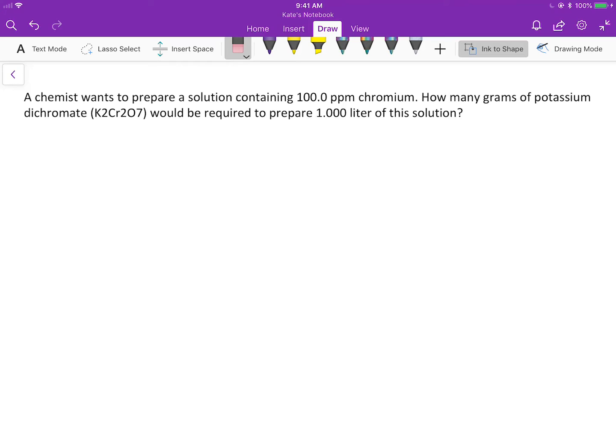A chemist wants to prepare a solution containing 100 parts per million chromate, chromate Cr. How many grams of potassium dichromate? The molecule here is supposed to be subscript. Will be required to prepare one liter of this solution.